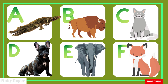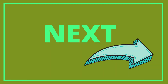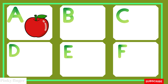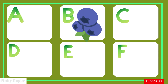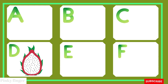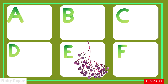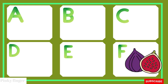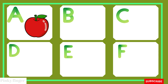We will go to the next one. A is for apple. Apple. B is for blueberry. Blueberry. C is for cherry. Cherry. D is for dragon fruit. Dragon fruit. E is for elderberry. Elderberry. F is for fig. Fig.